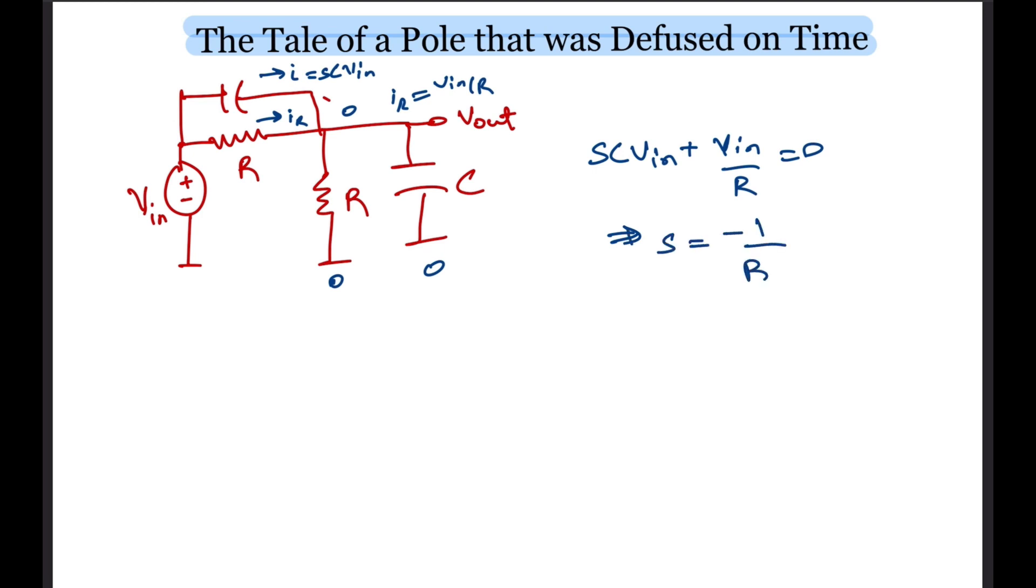To understand why the added capacitor doesn't add a pole, we look at the number of independent voltages needed to define the capacitor voltages. So, if we fix the voltage at this node, then both the capacitor voltages are defined. Thus, we only need 1 independent voltage to define the capacitor voltages and hence just have 1 pole.